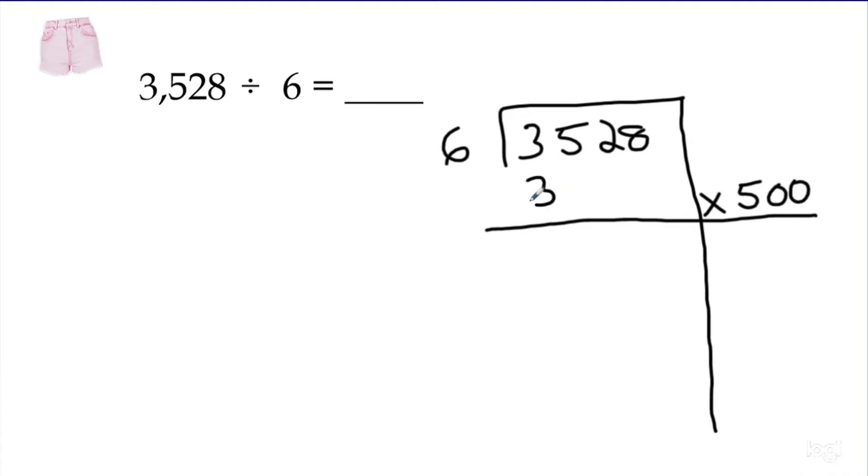And if I had 500 groups of six, that would of course be 3,000. I'm going to subtract. And I have 528 left over. I'm going to skip a line, draw a line, put my times.